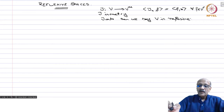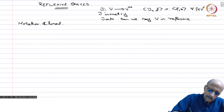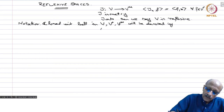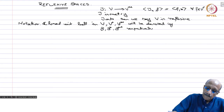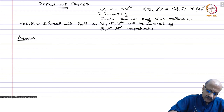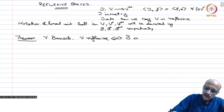Now we are going to characterize reflexive spaces using the weak topology. Notation: the closed unit balls in V, V star, and V double star will be denoted by B, B star, and B double star respectively. The first theorem — a very nice and important one: V Banach, V reflexive if and only if B is weakly compact, meaning compact in the weak topology.